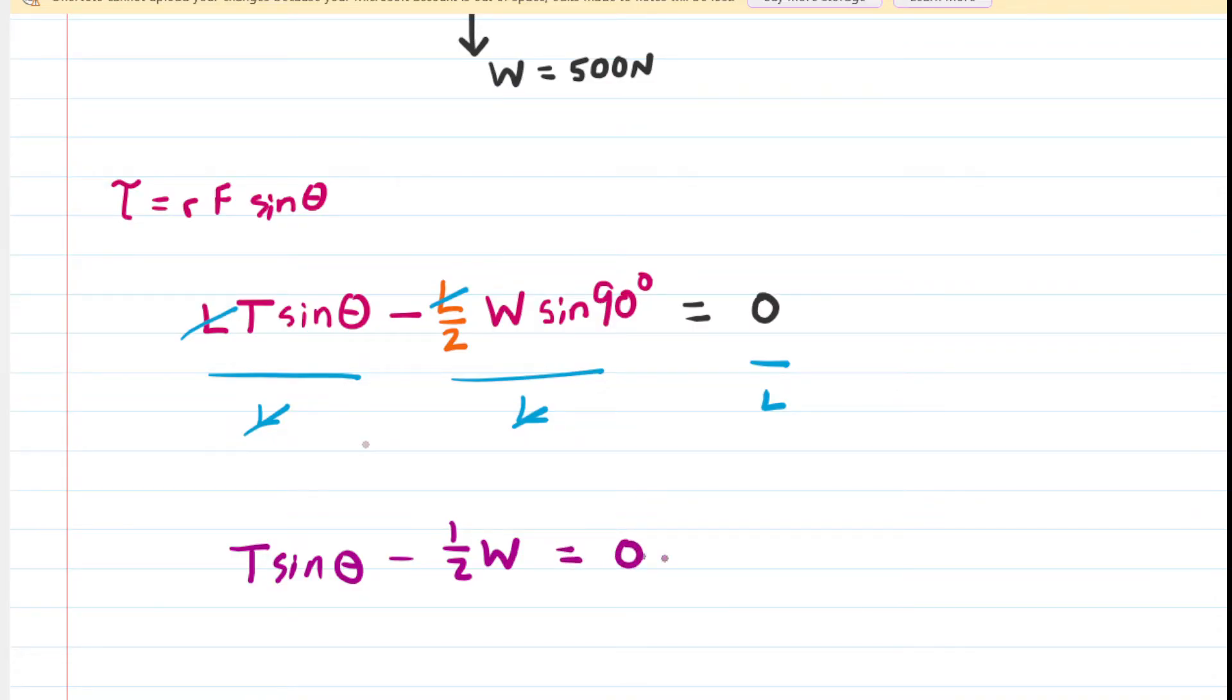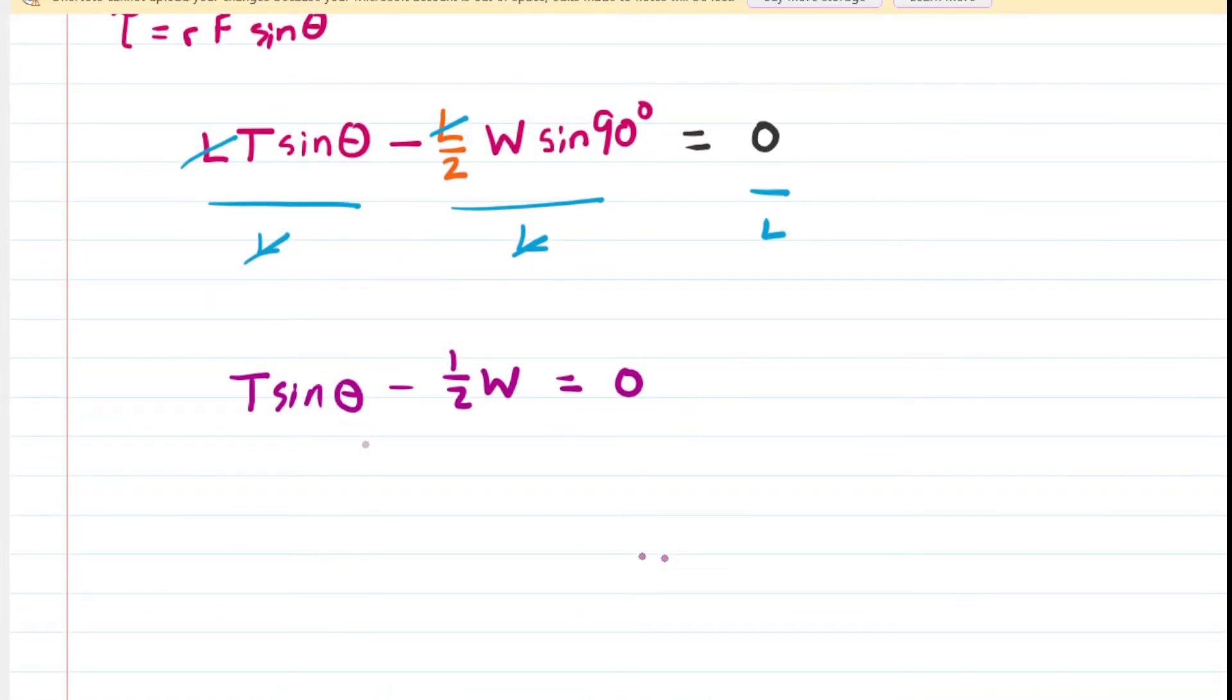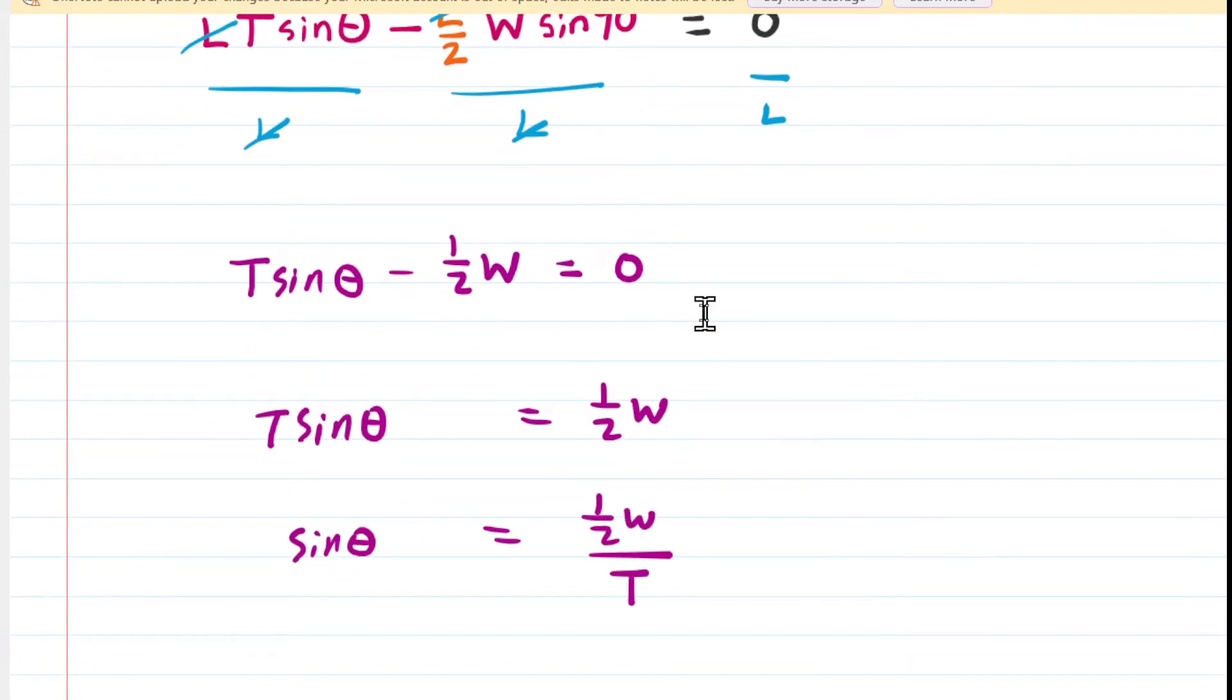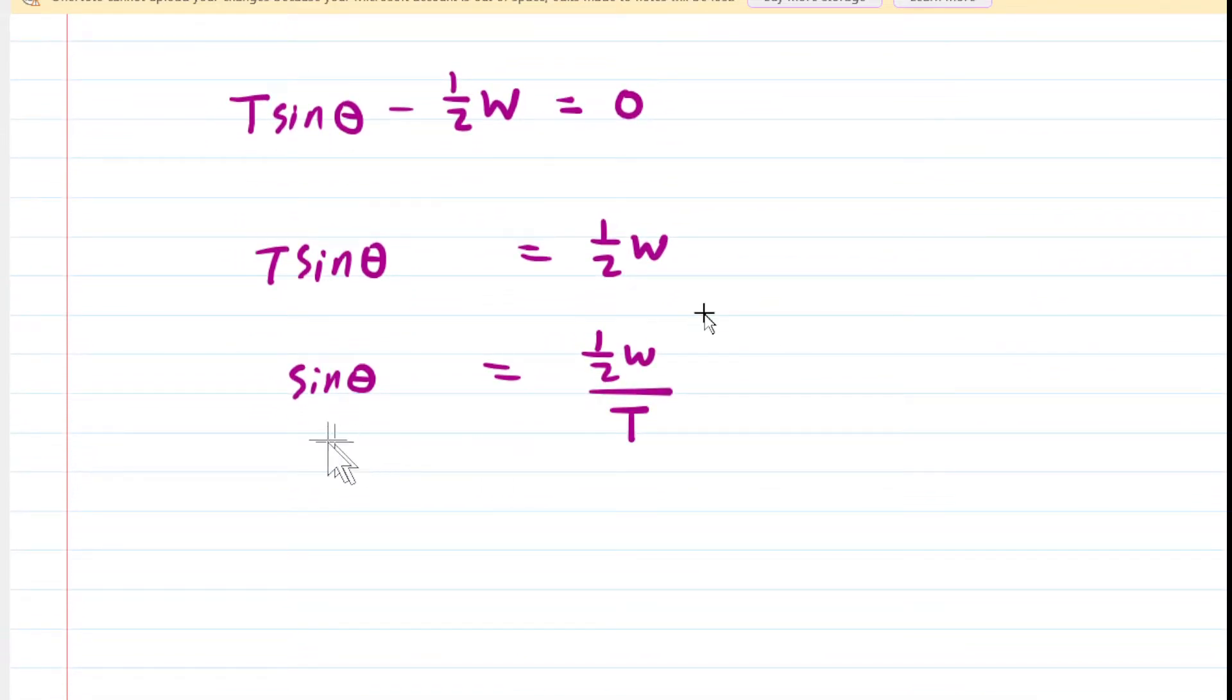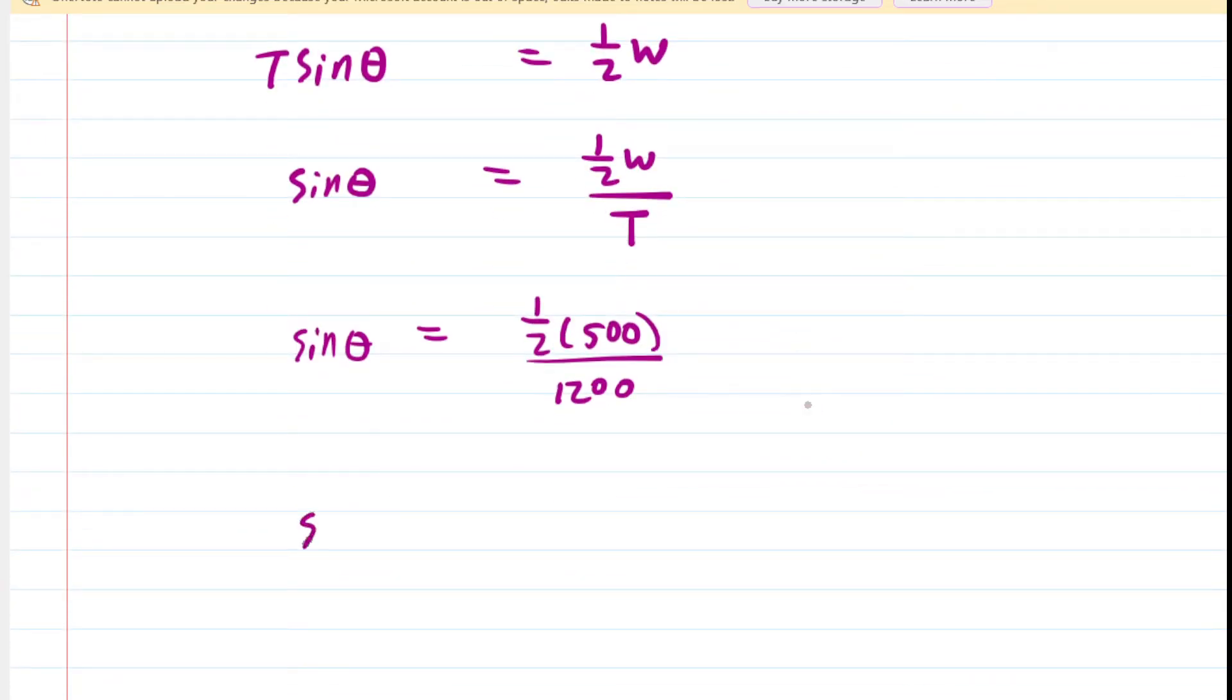So again, we're trying to solve for the angle theta. And we can perhaps add the 1 half W to the other side, and then divide both sides by the tension. And now we can plug in the known values for W and T. If we simplify the right hand side, we have the sine of theta is equal to about 0.208.